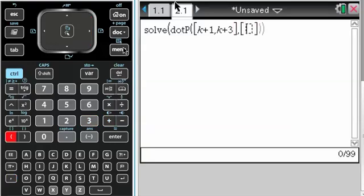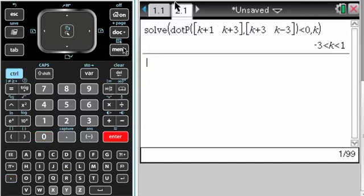And then for it to be obtuse, I need the dot product to be less than 0, and then I need to solve for k. And that just gives me the answer that I'm looking for.